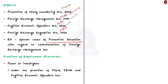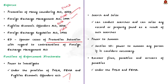Talking about the powers and functions of the Enforcement Directorate: firstly, the power to investigate any person or legal entity — ED can investigate under the provisions of PMLA, FEMA, and the Fugitive Economic Offenders Act. They can conduct searches and seize any record or property found as a result. Under Section 50 of PMLA, ED has the power to summon any person if it considers necessary. It can also recover fines, penalties, and arrears of penalties under PMLA and FEMA. That is all you need to know about the Enforcement Directorate.